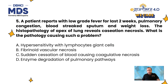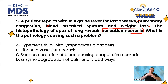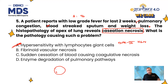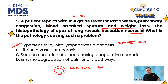Patient presents with low-grade fever for 2 weeks, pulmonary congestion, blood-streaked sputum, weight loss, and caseous necrosis. In India, low-grade fever for 2 weeks with blood, sputum, and weight loss — first DD is TB. The examiner confirmed TB by mentioning caseous necrosis, which is a type 4 hypersensitivity reaction, associated with giant cells. The fancy name for giant cells in TB is Langhans giant cells, where the multiple nuclei are arranged at the periphery giving a horseshoe-shaped appearance.